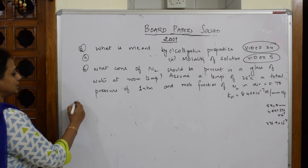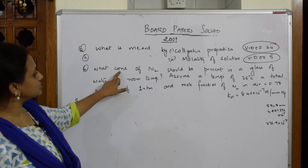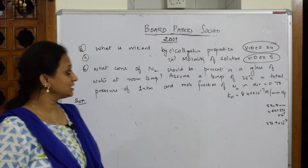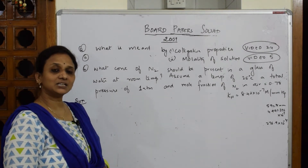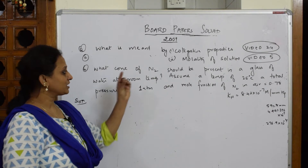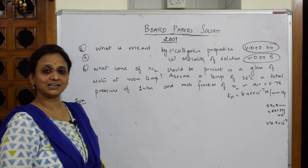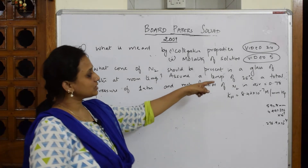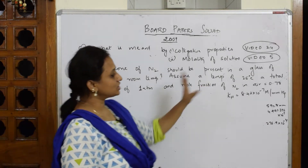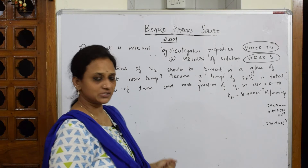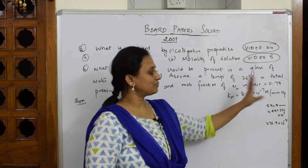In this particular numerical, what are we supposed to find out? I have to find out what concentration of N₂ should be present in a glass of water at room temperature. That is, I have to find the number of moles of nitrogen dissolved in that glass at room temperature. The conditions given are: temperature 25 degrees, total pressure 1 atmosphere, and mole fraction of N₂ in air is 0.78.